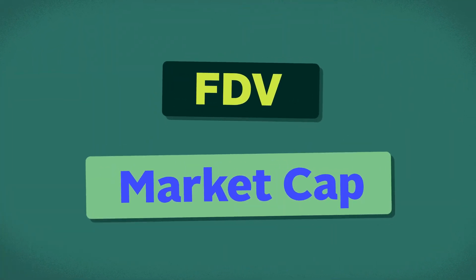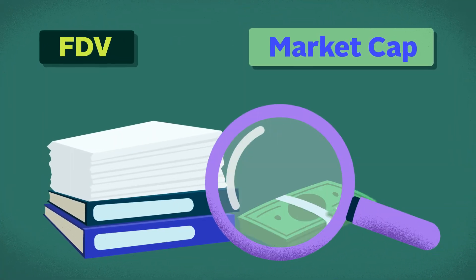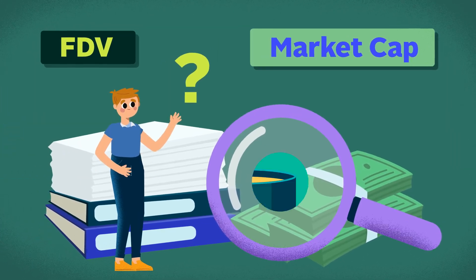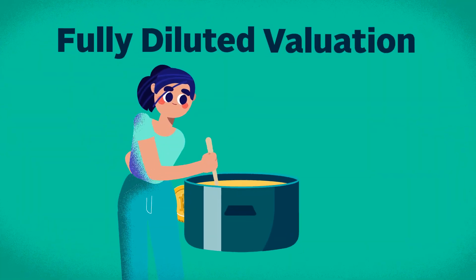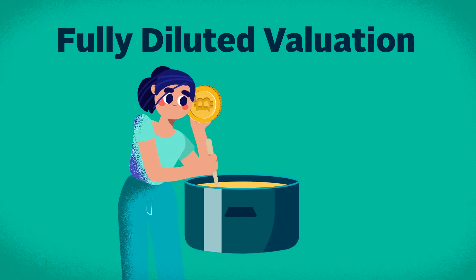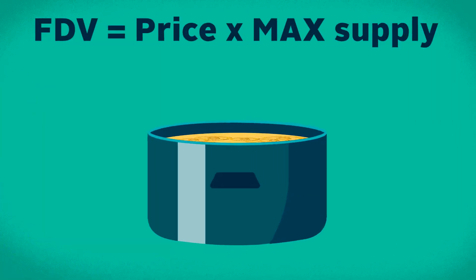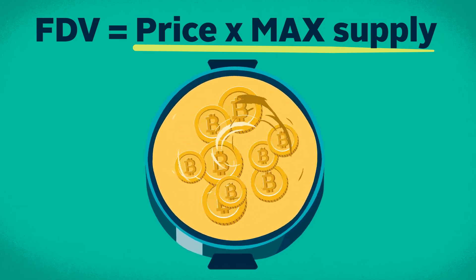FDV and Market Cap let you make better and more informed investment decisions. But what are they? Fully Diluted Valuation, or FDV, is the total valuation of the project once all of the coins that will ever exist are in circulation.